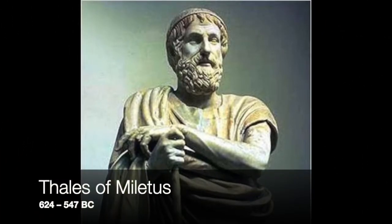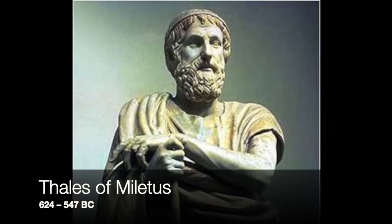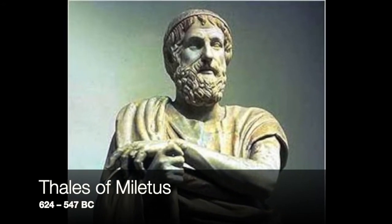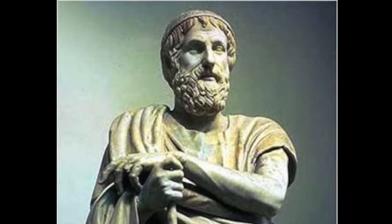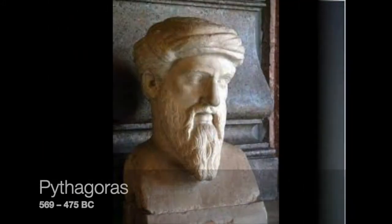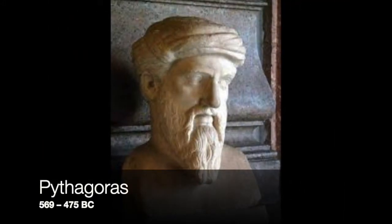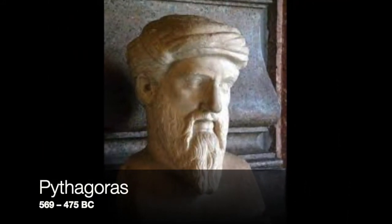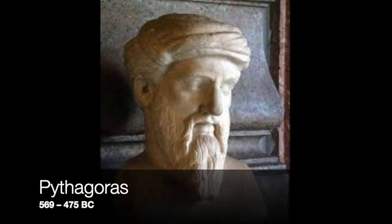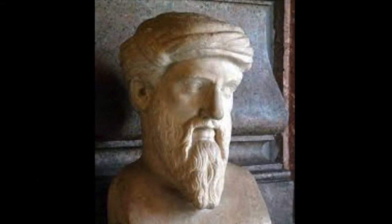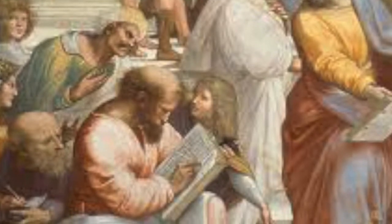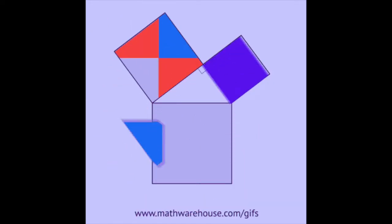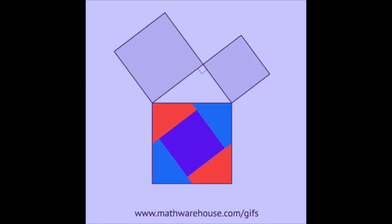Thales of Miletus studied similar triangles and wrote the proof that corresponding sides of similar triangles are proportional. Pythagoras is considered to be the first mathematician to logically deduce geometric facts from basic principles. He founded a group called the Pythagoreans, whose most famous theorem is the Pythagorean theorem, which states that the sum of the squares of the legs of a right triangle equals the square of the hypotenuse.